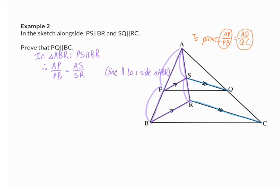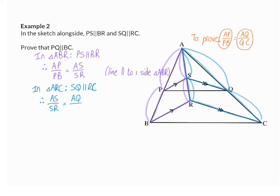Now to work on the right-hand side, I'm going to work in triangle ARC. In triangle ARC, we already know that SQ is parallel to RC, and therefore we can say that AS over SR is in the same ratio as AQ over QC. My reason: line parallel to one side of the triangle.